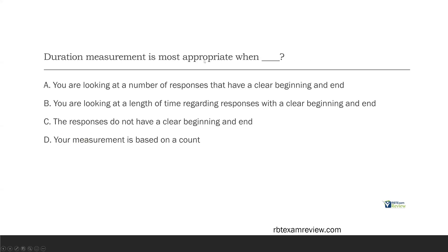Question three: duration measurement is most appropriate when — in the last video we talked about frequency measurement, which is most appropriate when there's a clear beginning and an end to a behavior. Duration measurement is very similar in that aspect, except we're measuring something different. A — you're looking at a number of responses that have a clear beginning and end. This idea of a number of responses is more frequency, because we're counting how many times a response occurs. Duration is looking for a length of time. So A is along the frequency lines: a clear beginning and end and a certain number of responses.